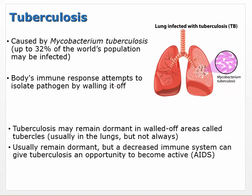The body's immune response attempts to wall off the pathogen — it isolates it, walls it off, but has a hard time killing it. After it's walled off, it can stay dormant in structures called tubercles for years. It usually remains dormant, but a decreased immune system — something like AIDS — can give it the opportunity to become active again.